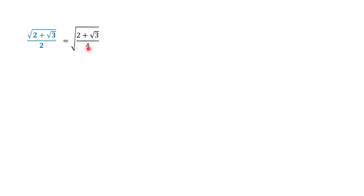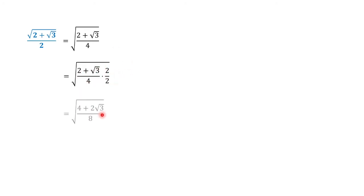If you simplify square root of 4, that would be 2, so these are just the same. Now let us multiply 2 over 2 to our expression. So we have 2 times 2 equals 4, and then 2 times square root of 3 is 2 square root of 3. 4 times 2 is 8. In our numerator, we can take the square root if this is a perfect square.